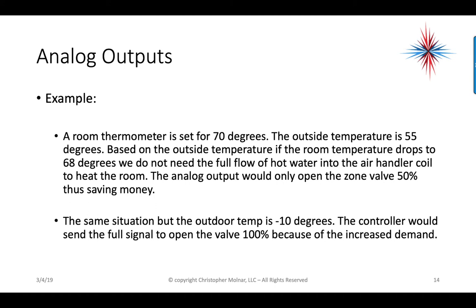An example: a room thermometer is set for 70 degrees and the outside temperature is 55 degrees. If the room temperature drops to 68 degrees, we do not need the full flow of hot water in the air handler coil to heat the room. The analog output would only open the zone valve 50%, thus saving money. In the same situation, if the outdoor temperature is negative 10 degrees, the controller would send the full signal to open the valve 100% because of the increased demand. If the outdoor air temperature is warmer, the building is losing less heat and we only need 50% of our full potential.